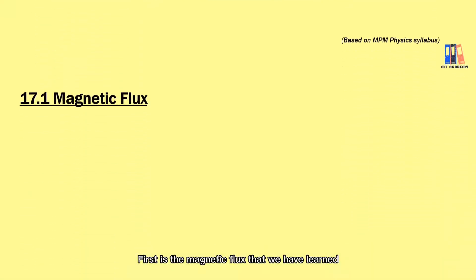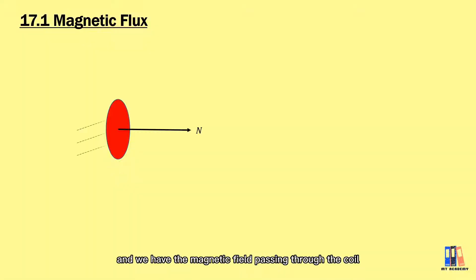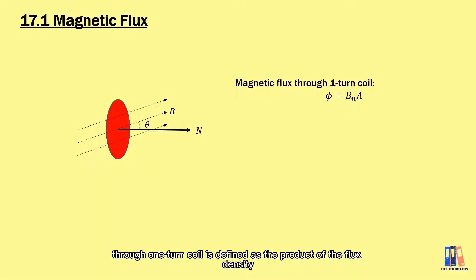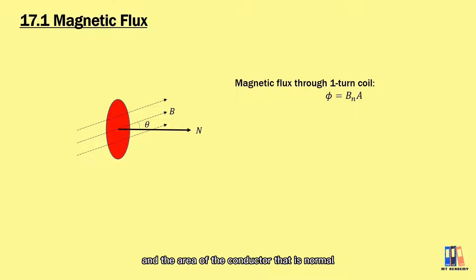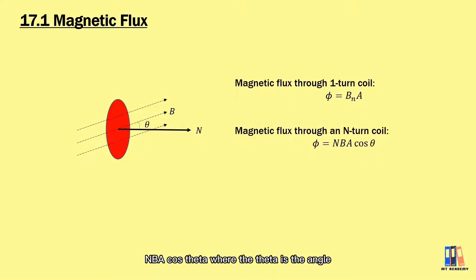First is the magnetic flux. We have learned about the flux density in the previous chapter. When we have a coil as shown in this diagram and a magnetic field passing through the coil at an angle to the normal of the coil, the magnetic flux through a one-turn coil is defined as the product of the flux density and the area of the conductor normal to the magnetic flux. Hence, the magnetic flux through an N-turn coil is defined as NBAcos(θ), where θ is the angle between the magnetic field and the normal of the coil.